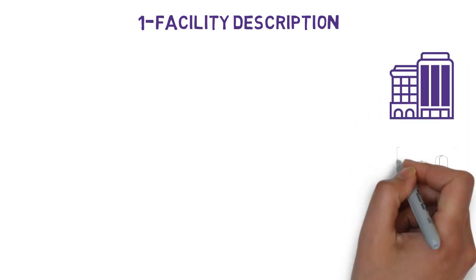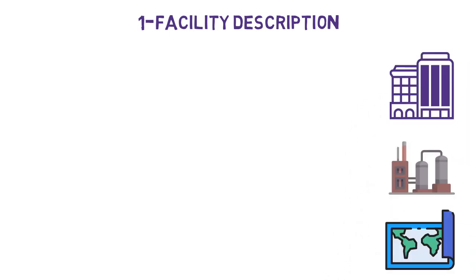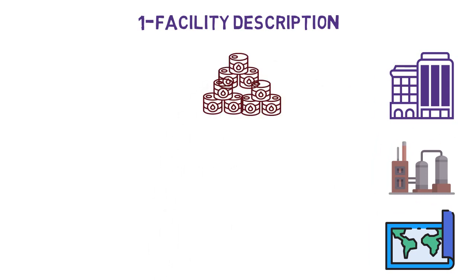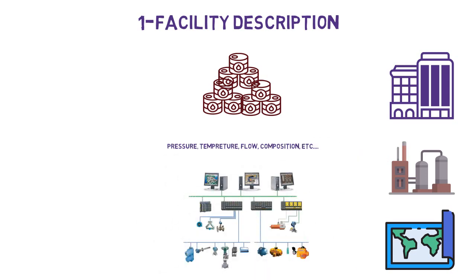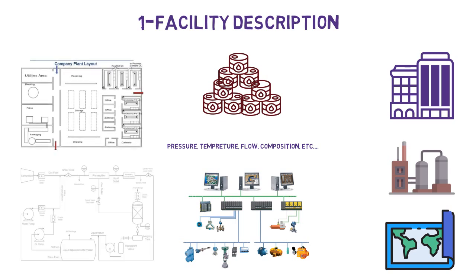Facility Description: In this part, we can find information about the company and the installation, such as the geographical location and the nature of the installation activities. This is in addition to the quantities of the hazardous material, the operating conditions, and the existing safety and control systems. We also provide all drawings that show equipment distribution and process flow, such as plot plans and process flow diagrams.